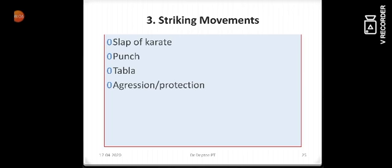Then there are striking movements which we do with the help of hand like the slap of karate or punching, the boxing thing, tabla playing. Tabla uses the hand as a motor or function organ. Then like aggression or slapping someone.